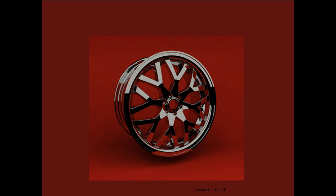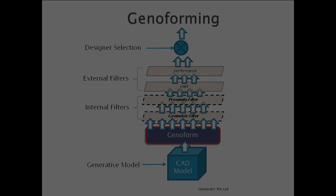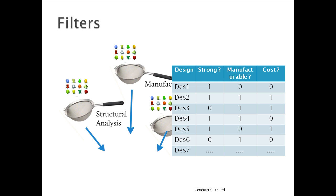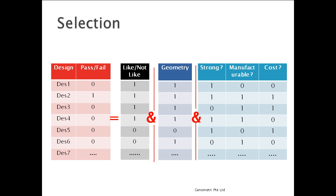Let me explain how Genoform works. You first generate designs and then filter these designs through various criteria, so you can pick amongst the best solutions. The selection is entirely yours and is not driven by a single numerical criteria. The final selection is done by a combination of filters.